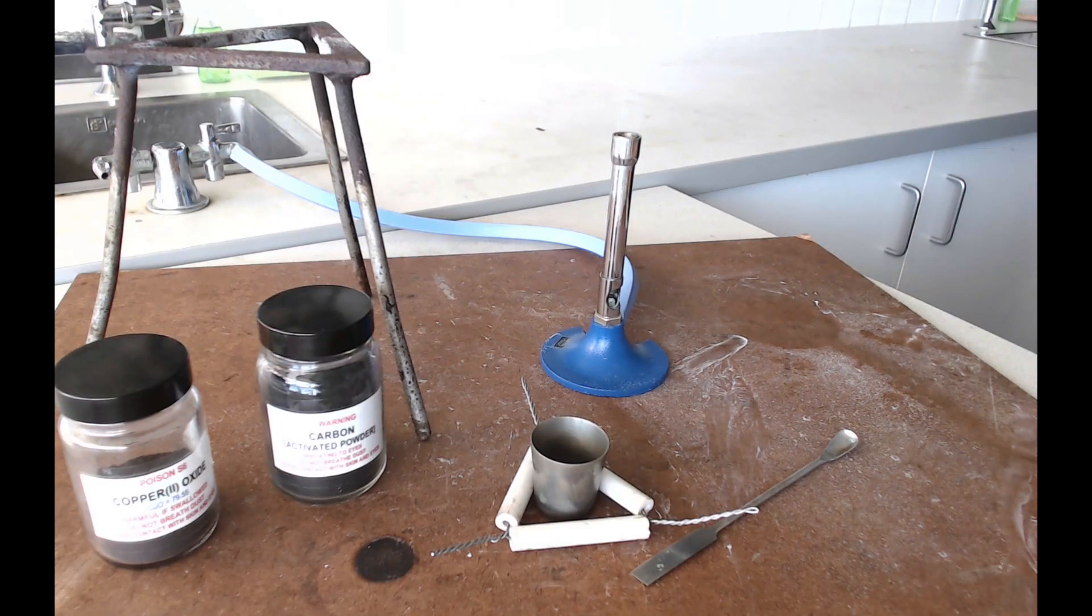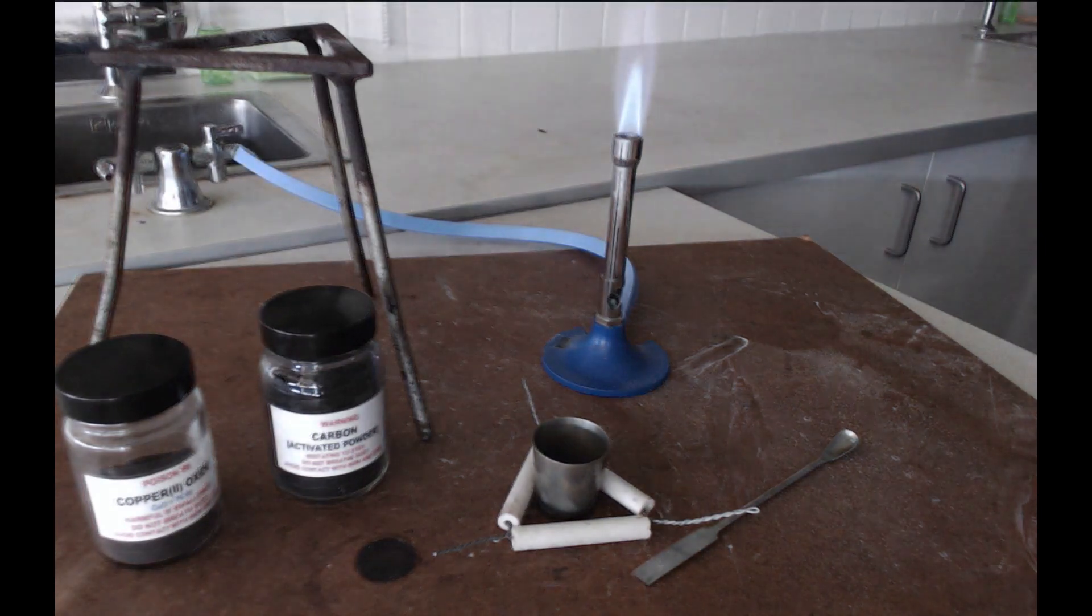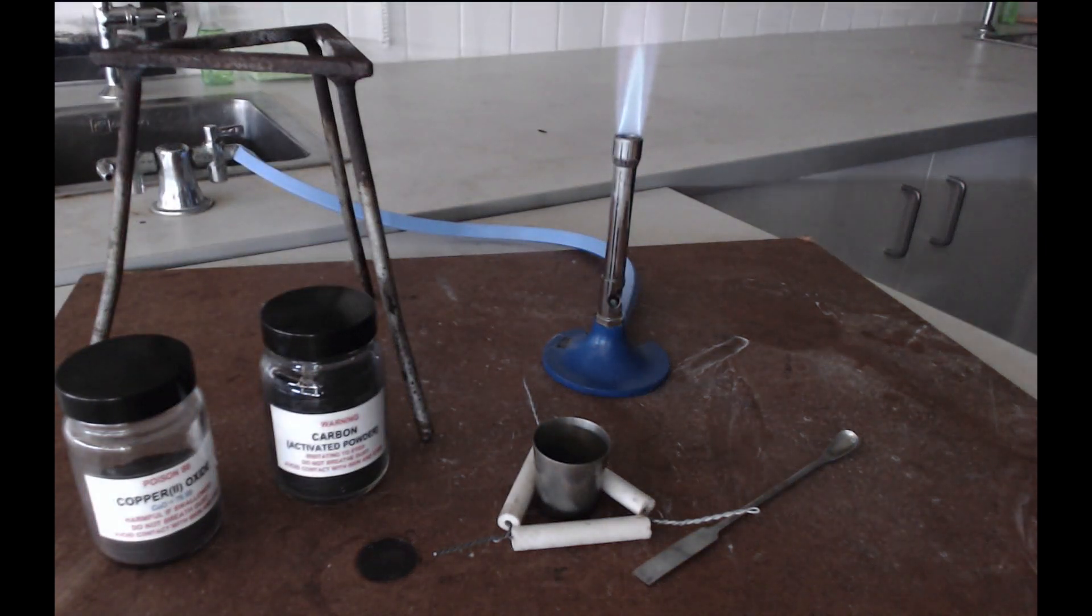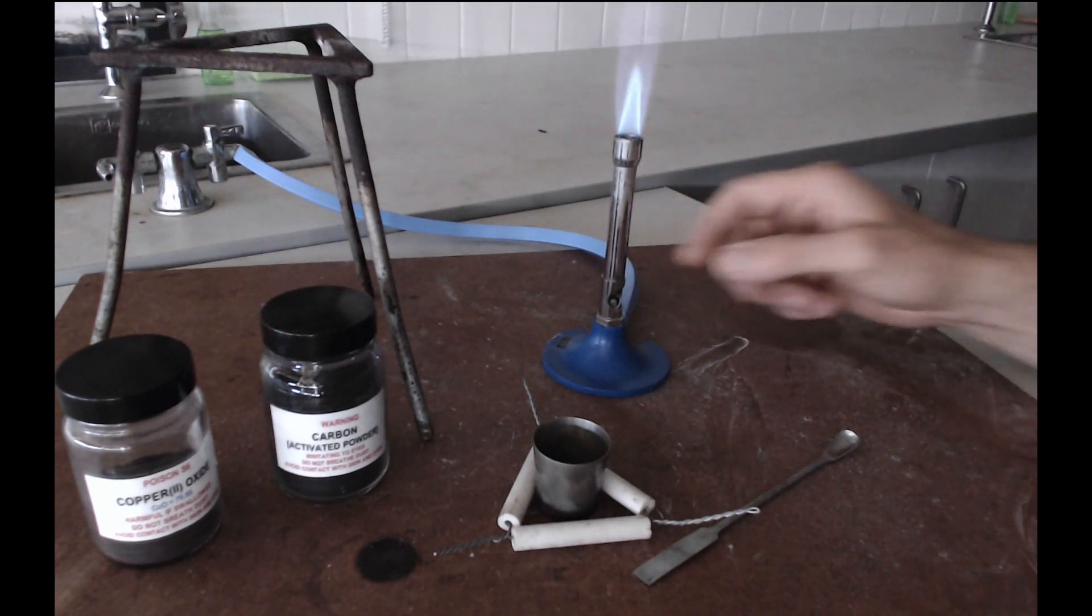I'm just going to dim the lights for a second so that you can see what this flame looks like and it's that tip of the blue flame that is the very hottest part of it so that's the bit that you want to heat with. So in other words you want to try and get that tip of the blue cone to be touching the bottom of your crucible.